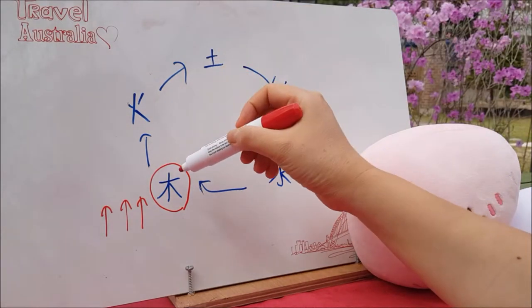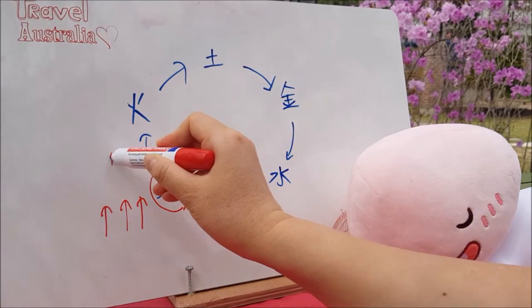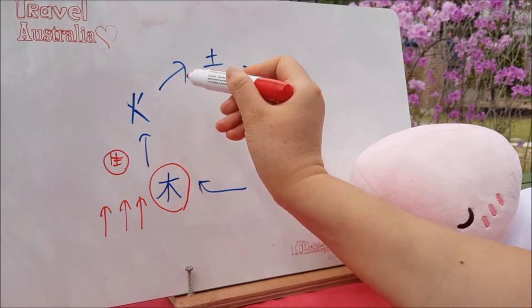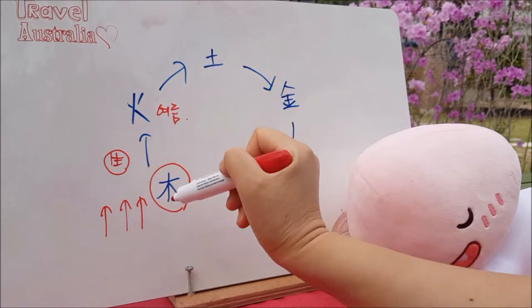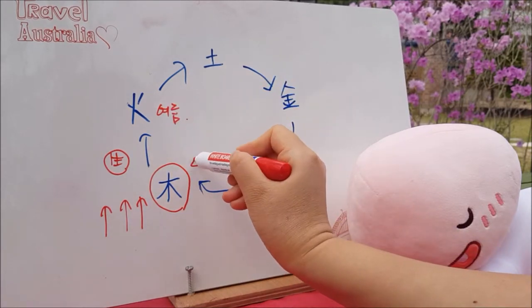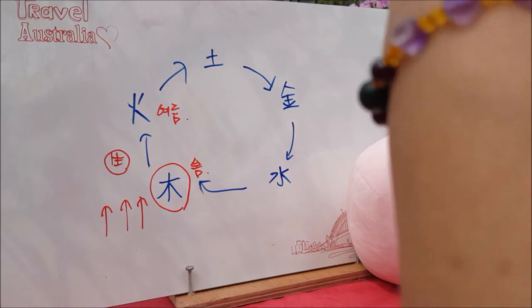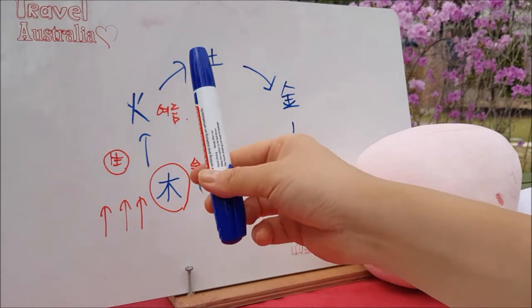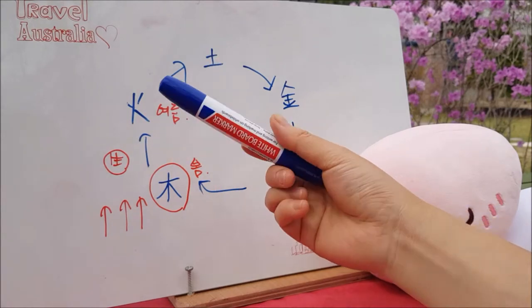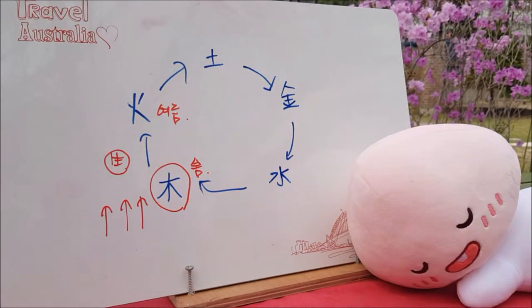봄에 해당하는 것을 목기운이라고 하고요. 목은 화기운을 생해줍니다. 화는 바로 여름을 대표하는 기운이고요. 목은 봄을 뜻하는 기운으로, 봄은 뚫고 올라오는 생명력이기 때문에 색깔로 말씀을 드리자면 푸른색, 블루 계열이 많고요. 녹색도 해당이 되겠습니다.